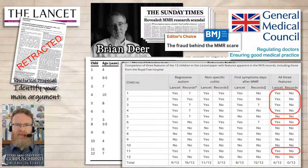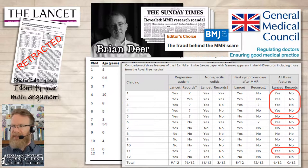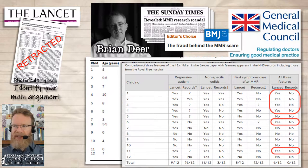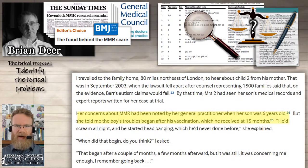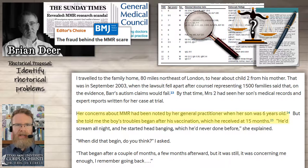When Deere compared what the parents told him to what Wakefield recorded, he found that only one child even seemed to have what Wakefield was describing as regressive autism — a child that did not already have signs of autism before the MMR vaccine. And even that child didn't start to show signs of autism until long after the MMR vaccine. Brian Deere interviewed the mother of that child; he wanted to see if the child's onset of symptoms actually matched what Wakefield said. The mother told him that her concerns about the MMR had been noted by her general practitioner when her son was six years old.